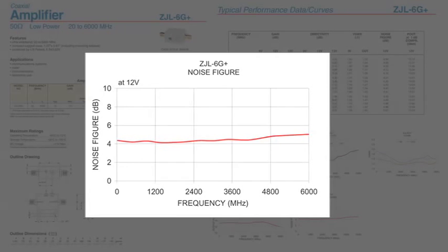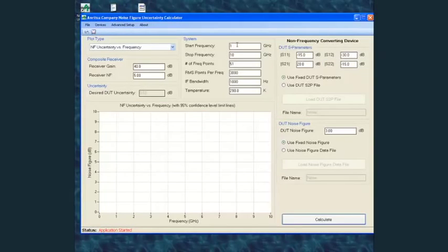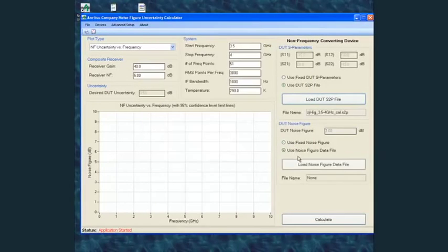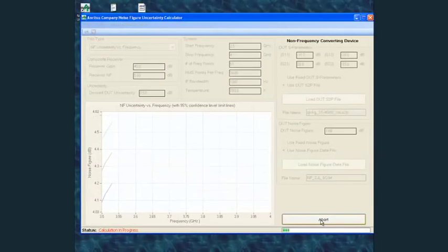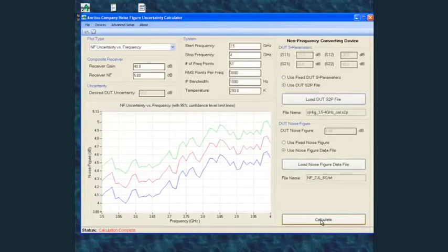In many applications, the noise figure measurement data is only part of the answer. It may be important to know the uncertainty of the measurement as well. Because there are so many possible contributors to the noise figure measurement uncertainty, Anritsu provides an uncertainty calculator. It's a standalone program that can either be run from the desktop of the VectorStar VNA or on an external PC. It provides the ability to calculate noise figure measurement uncertainty as well as determine the optimum measurement setup to achieve a desired measurement uncertainty target.